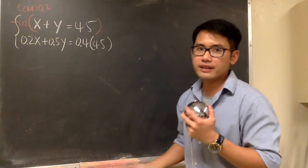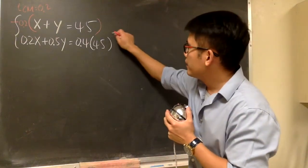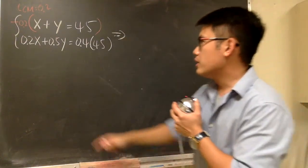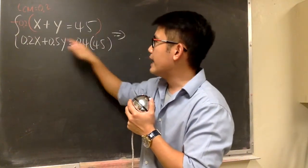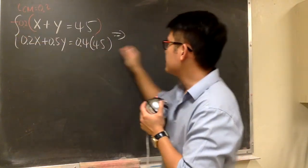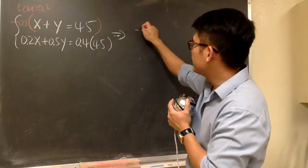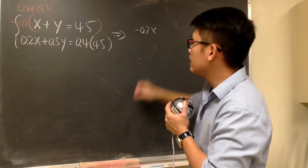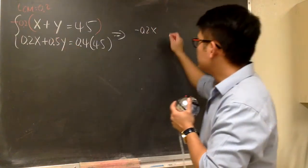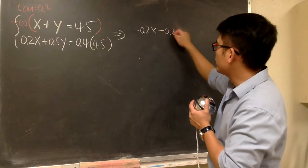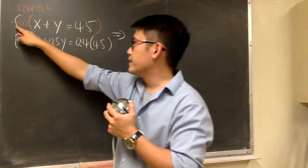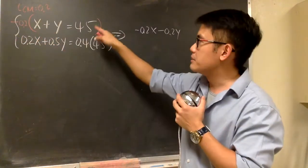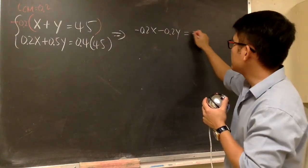Right, and let's see what we have right here. So, we have to distribute this into all that. Negative 0.2 times x, that will give us negative 0.2x. And this times y is just negative 0.2y. And negative 0.2 times 45, this will give us negative 9.